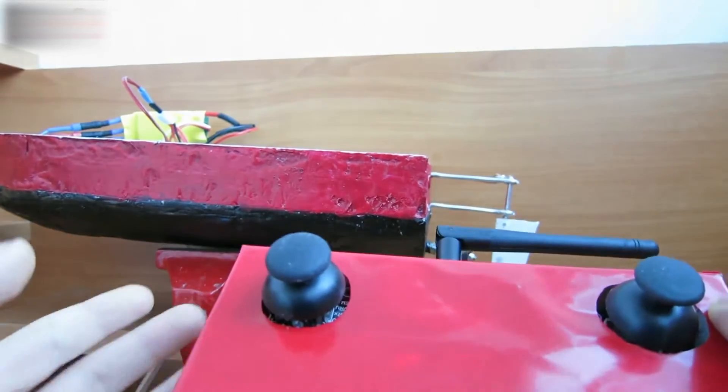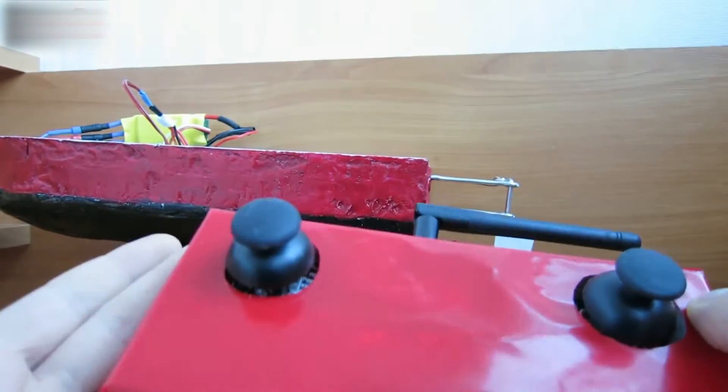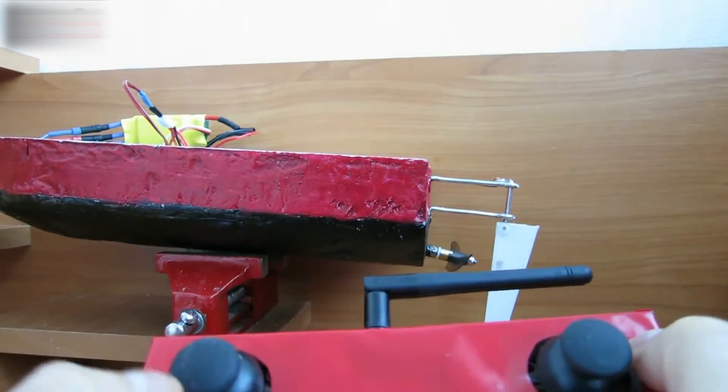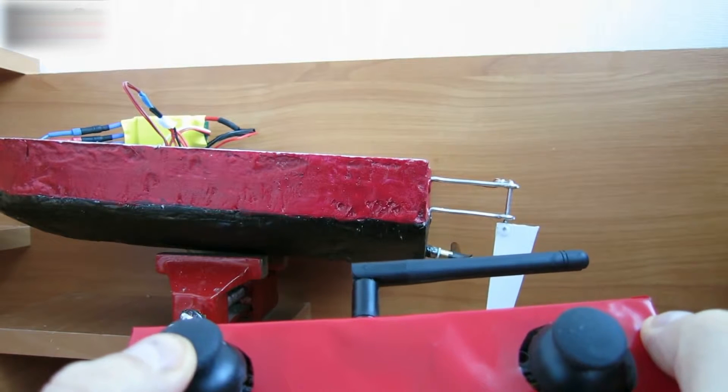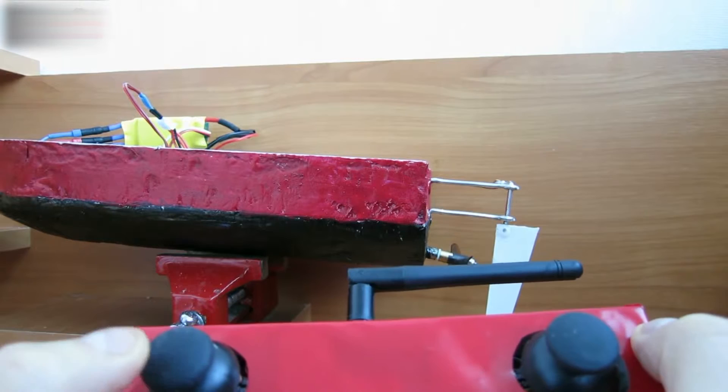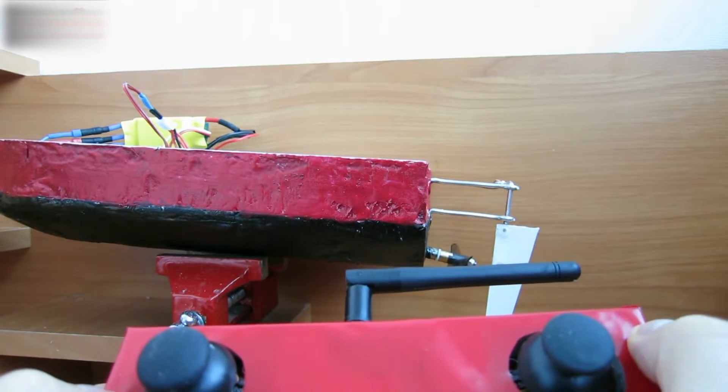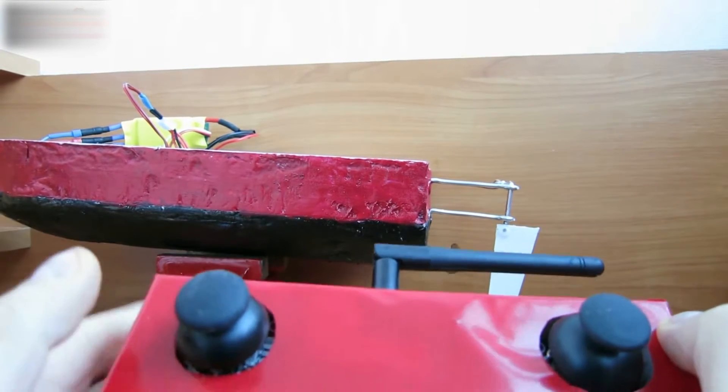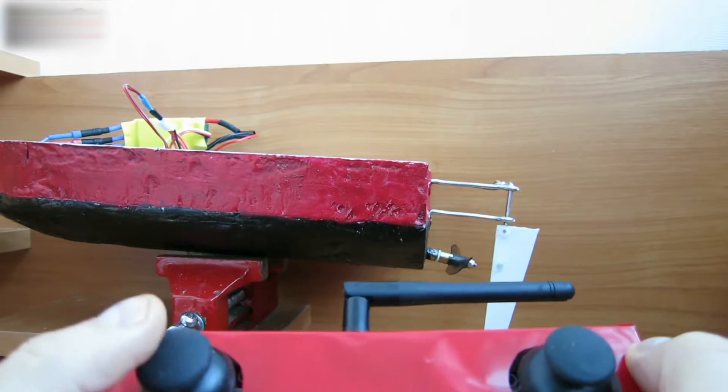You cannot operate the motor straight away as its speed controller is blocked. You need to turn the gas stick about halfway to unblock the controller. As soon as you hear the signal, you can operate the boat.